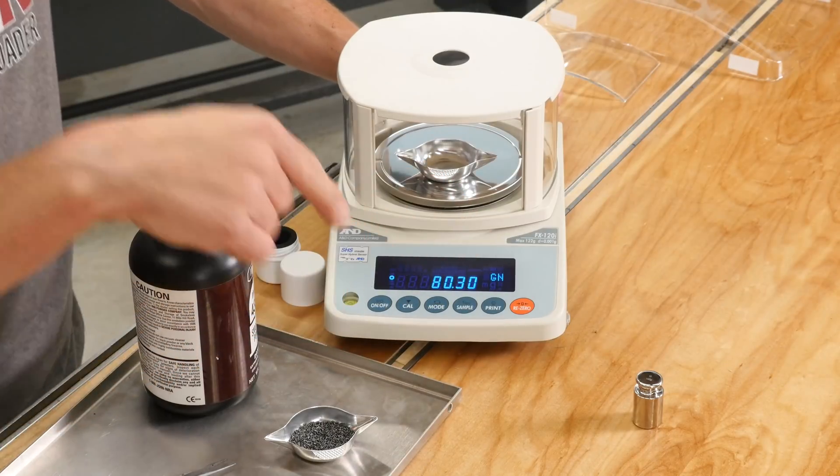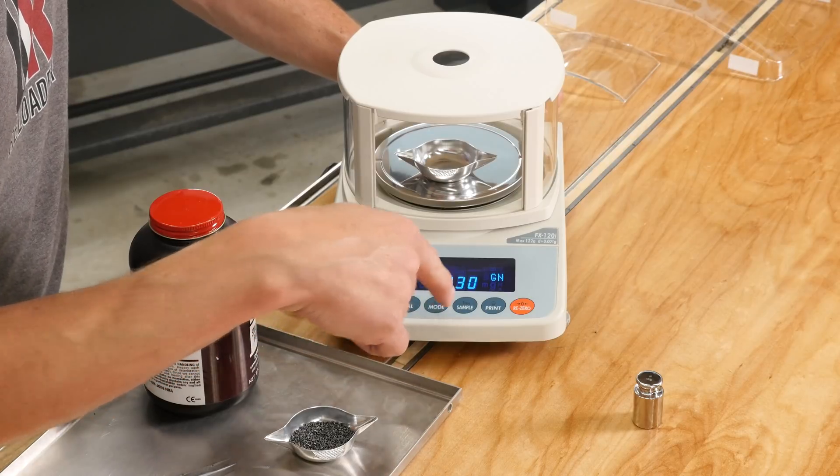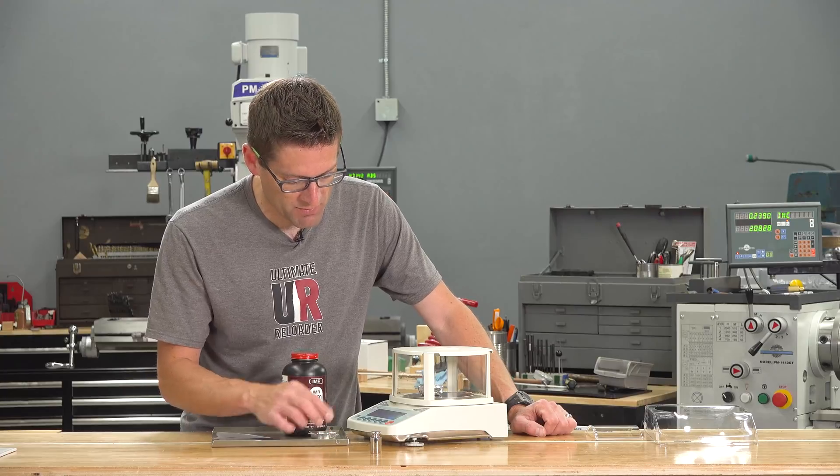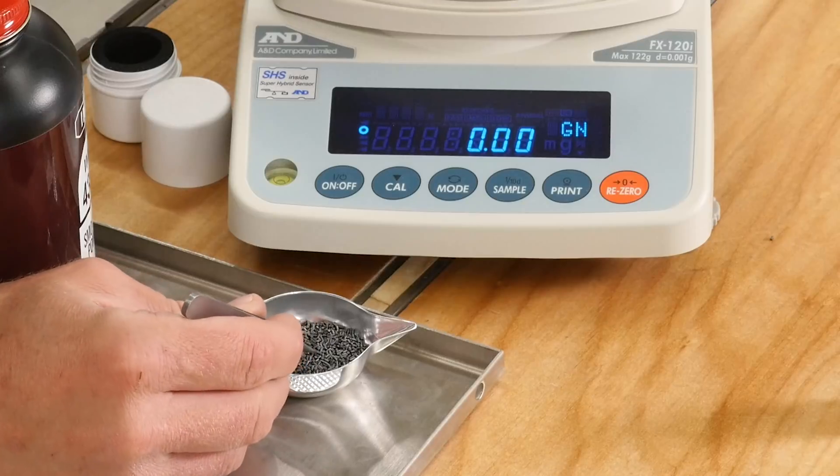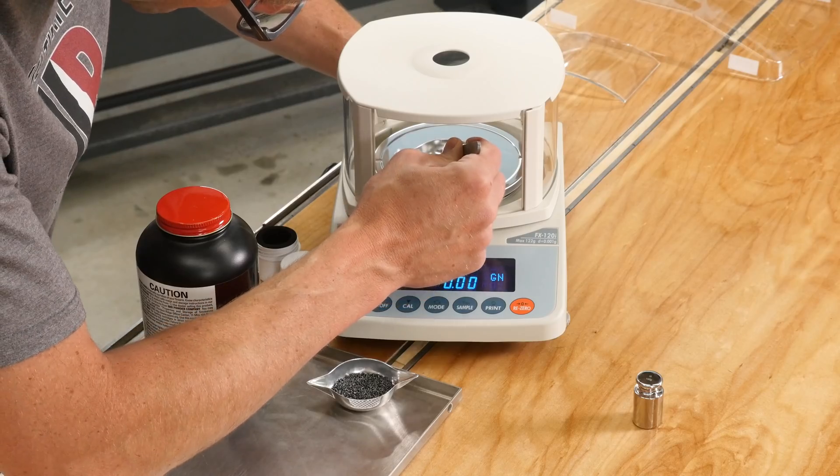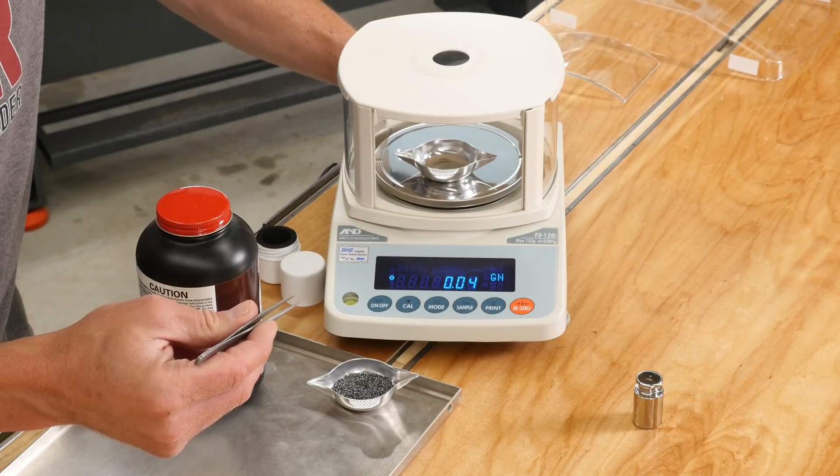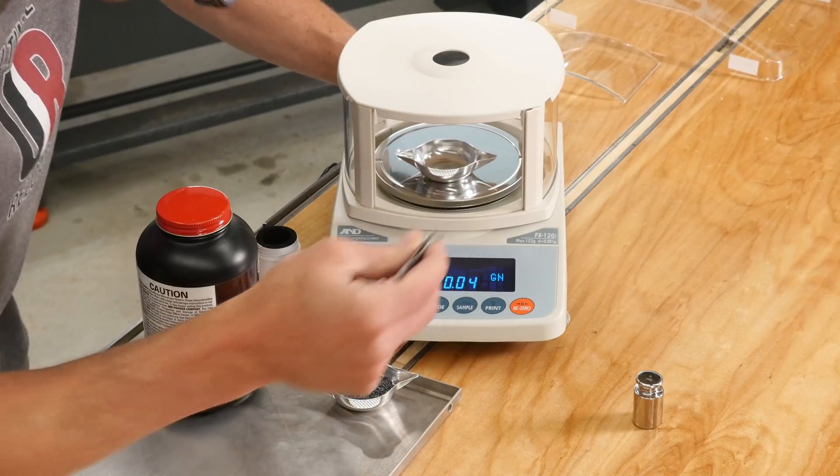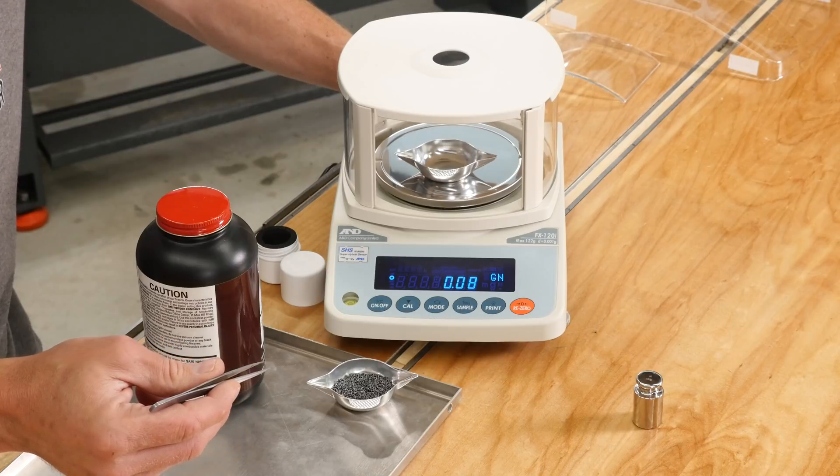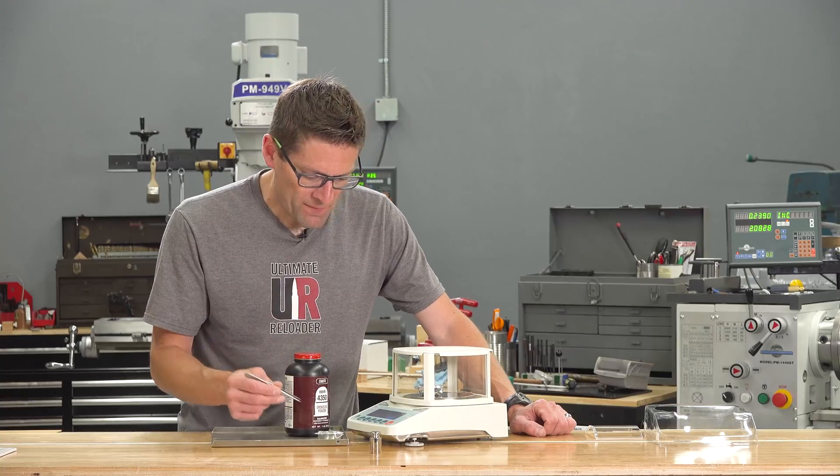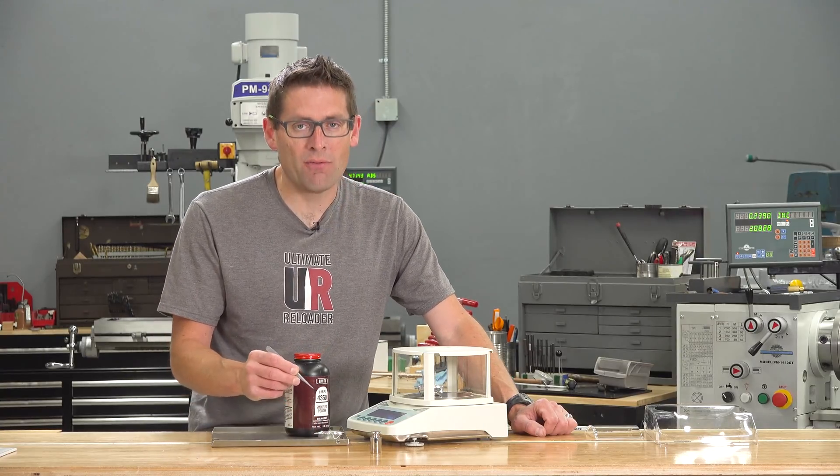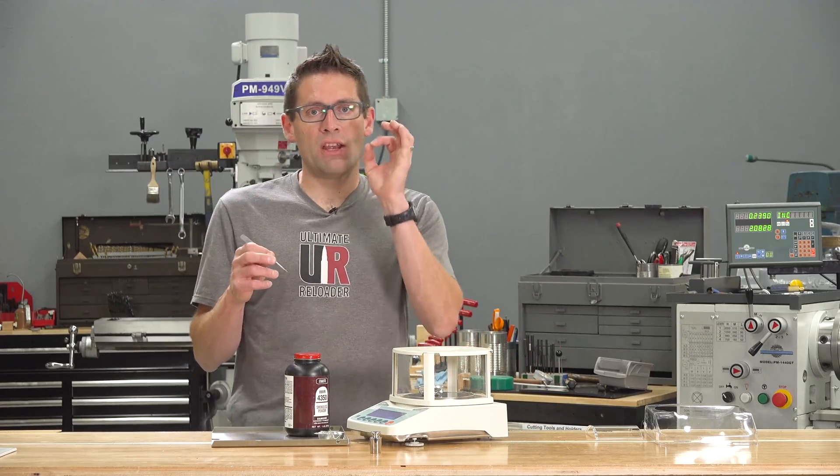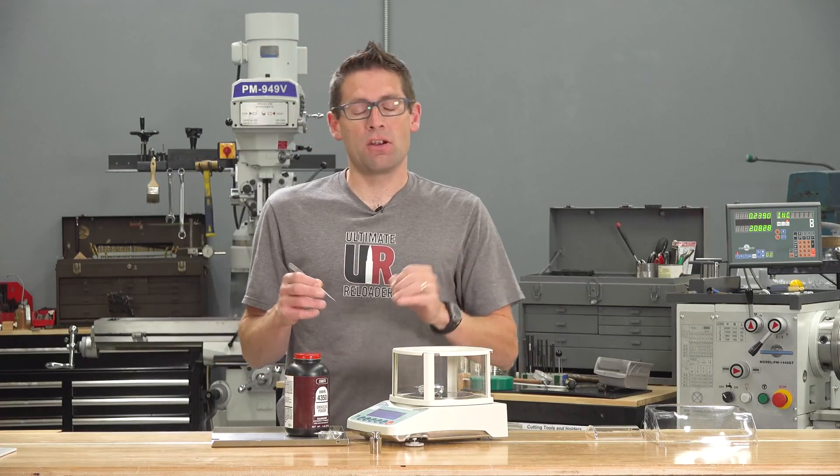Two modes, grams and grains. Nice and simple. And if we hit re-zero here, it's just going to take off the weight from the pan itself. Now anything we put on the pan will be detected by the readout here. So I'm going to attempt with tweezers here to grab one kernel of this IMR4350. Looks like we're at 4 hundredths of a grain. Let's see what happens if we put another one on here. 8 hundredths of a grain. So since this can measure two hundredths of a grain, that means it could actually detect half of one of these kernels of IMR4350 going on to the pan. And that means that for smaller stick powders like Varget, each individual kernel will be detectable to an exact value here on the scale, which is just absolutely amazing.